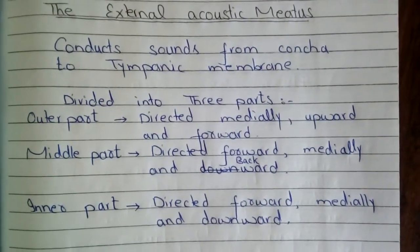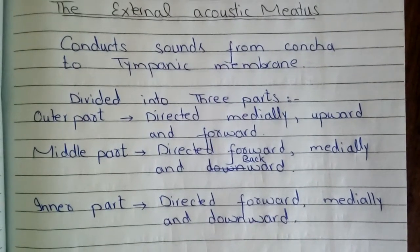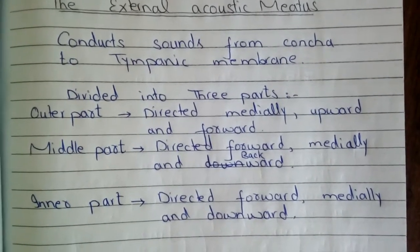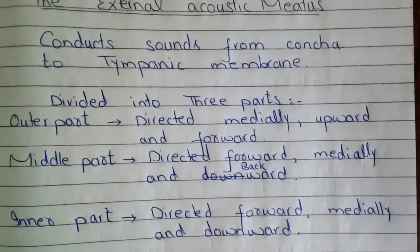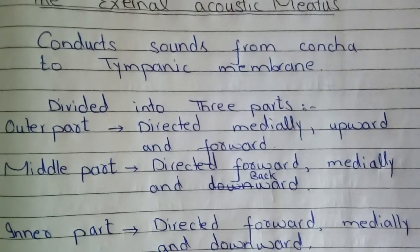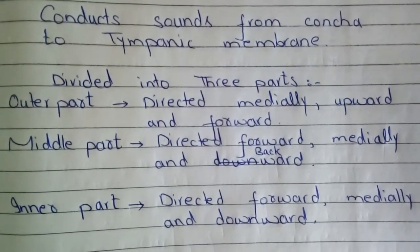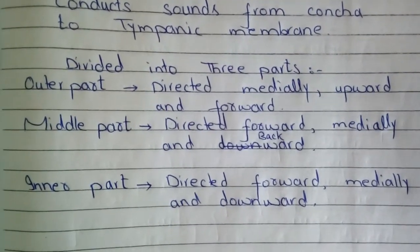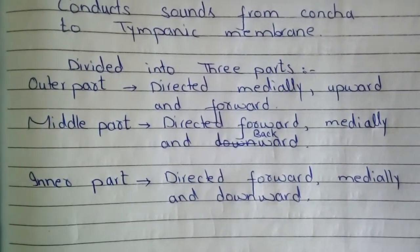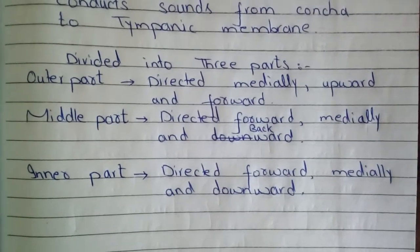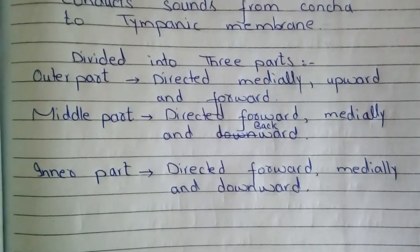The second part of the external ear is the external acoustic meatus. It conducts sound from the concha to the tympanic membrane. It is long and divided into three parts: outer, middle, and inner part.